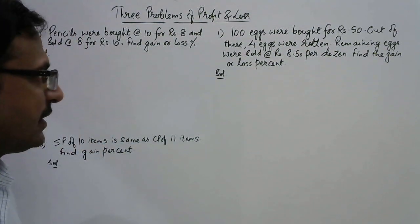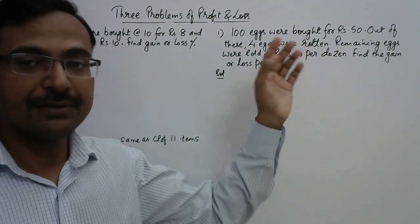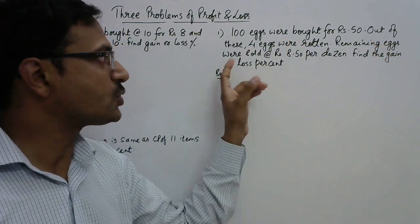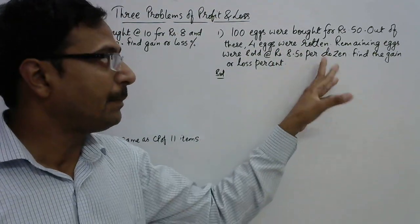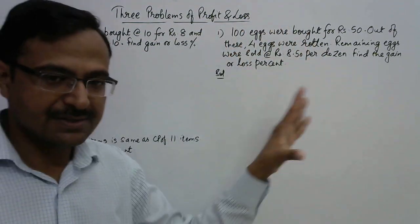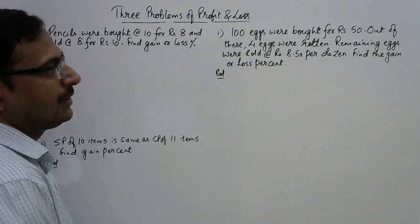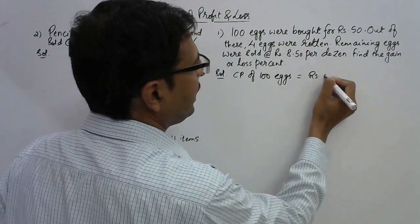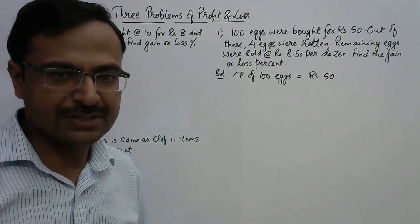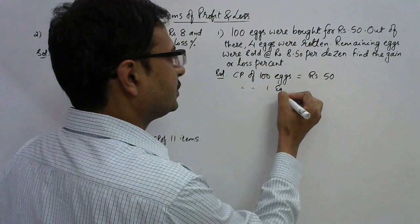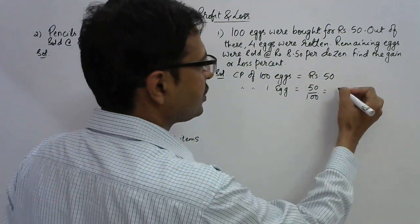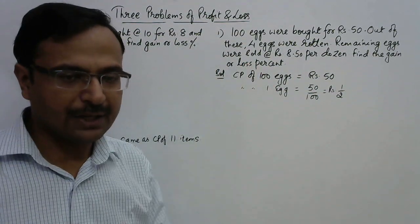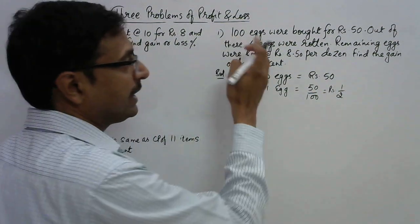The first question: 100 eggs were bought for rupees 50, so the cost price of 100 eggs is rupees 50. Out of these, four eggs were found rotten, so remaining eggs were sold at the rate of rupees 8.50 per dozen. We need to find the gain or loss percent. The cost price of one egg is 50 upon 100, which is rupees 0.5.